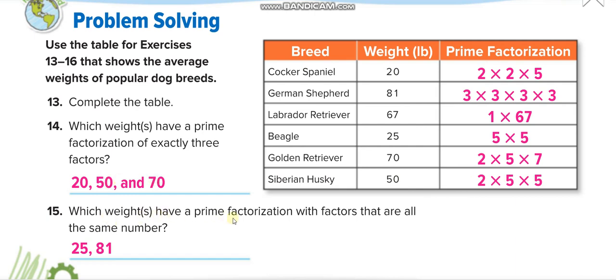Which ways have a prime factorization with factors that are all the same numbers? Where we have all the same numbers? Here, no, different. Here, yes, all three same. First one, 81. Then different. Here, all same, 25. Different, different. So 25 and 81.